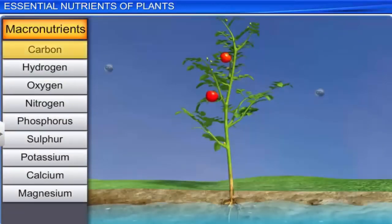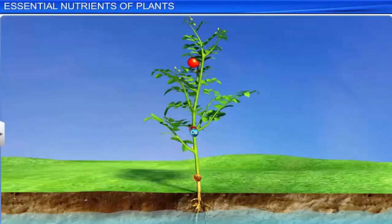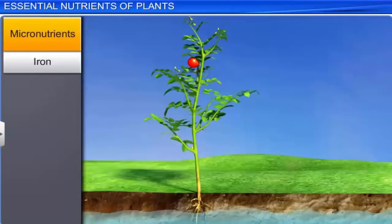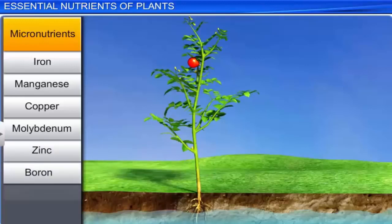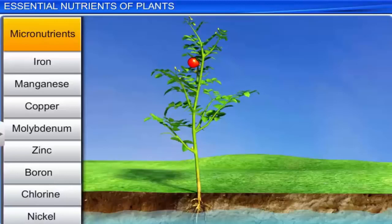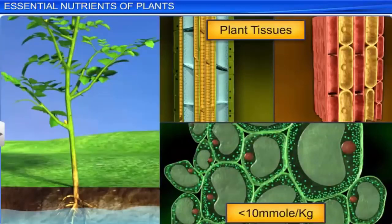Of these, carbon, hydrogen, and oxygen are mainly obtained from CO2 and H2O, while the others are absorbed from the soil. The elements that are required in minute quantities are called micronutrients, or trace elements. Iron, manganese, copper, molybdenum, zinc, boron, chlorine, and nickel are examples of micronutrients. Plant tissues contain less than 10 m mole per kg of dry matter.